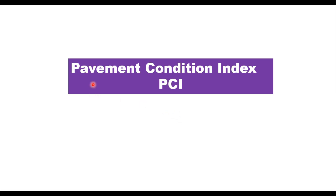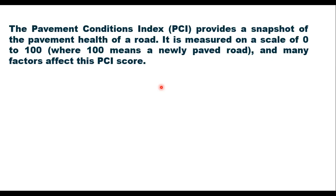Today we shall discuss Pavement Condition Index or PCI. The first step towards planning of maintenance of highways is the evaluation of the existing pavement surface in terms of its physical condition as well as structural capacity. The pavement condition index provides a snapshot of the pavement health of a road. It is measured on a scale of 0 to 100, where 100 means a newly paved or perfect road, and many factors affect this PCI score.